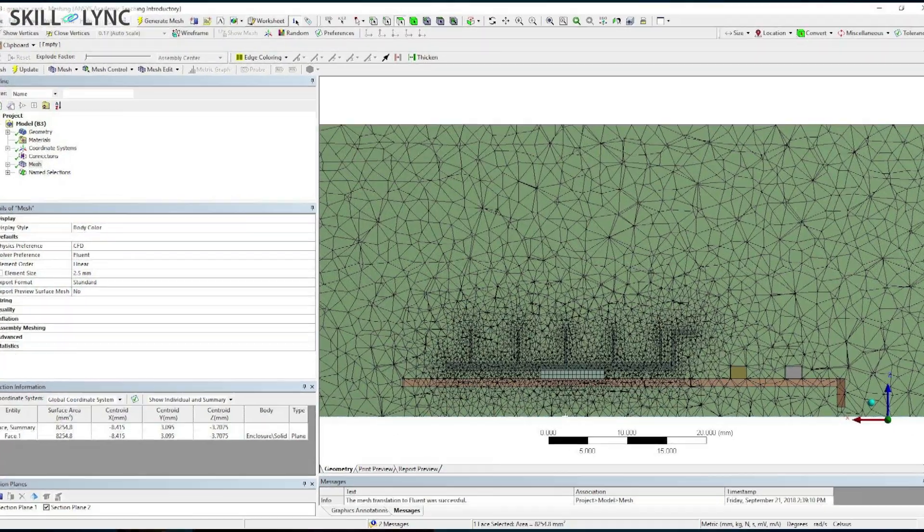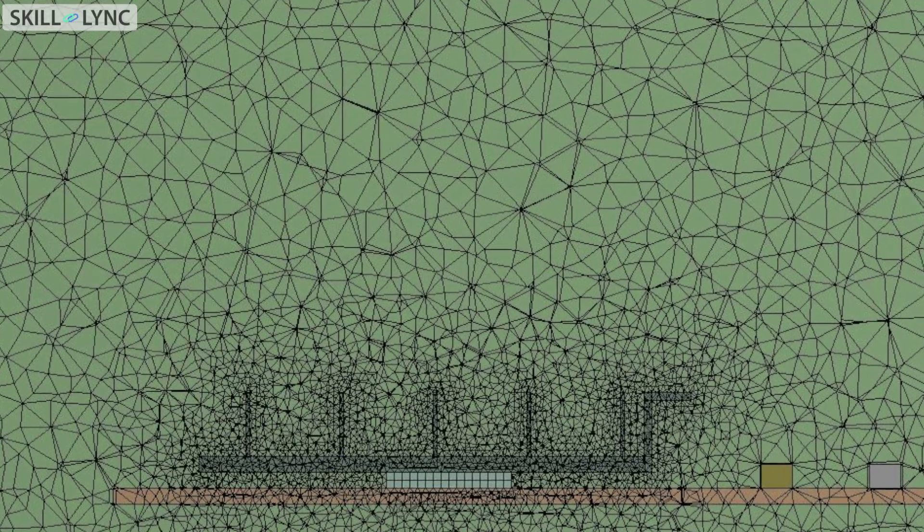For the enclosure, we basically have high quality tetrahedral meshes, and for the solid components I'm applying body sizing. Once this is done, we can proceed to ANSYS Fluent.